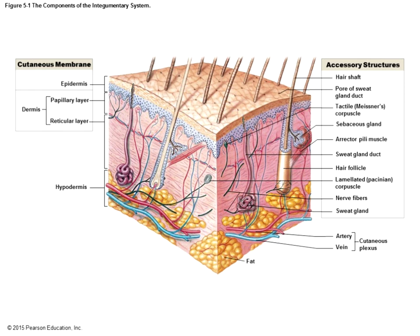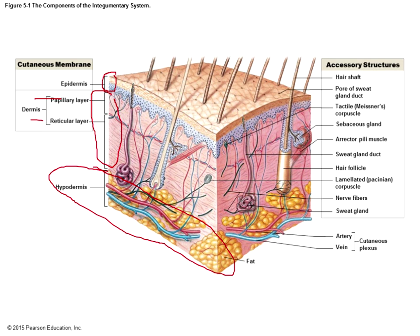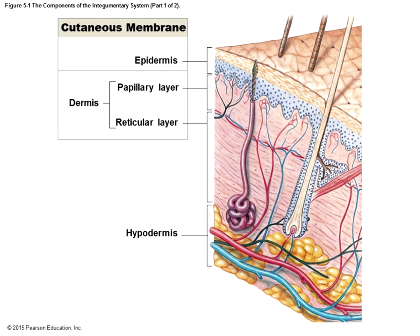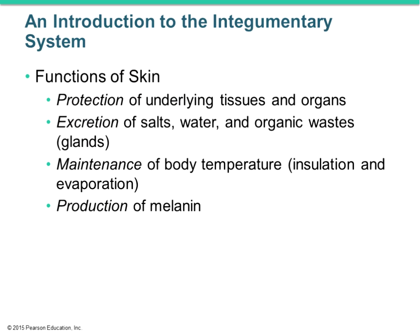Here you can see a section of skin. The cutaneous membrane itself is the epidermis up top, which is stratified squamous epithelium. The dermis is the middle part and has two parts — a papillary and a reticular layer. The hypodermis is at the bottom, primarily adipose tissue, but with larger vessels that branch up into the dermis. You can also see structures like hair shafts and sweat glands in the dermis.